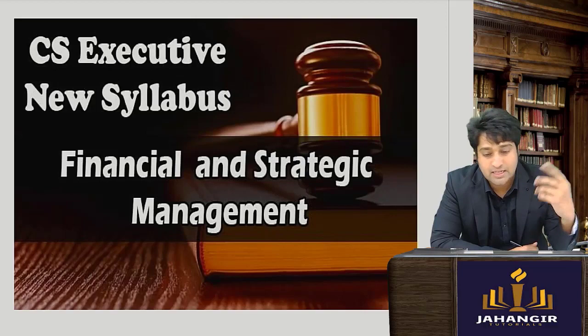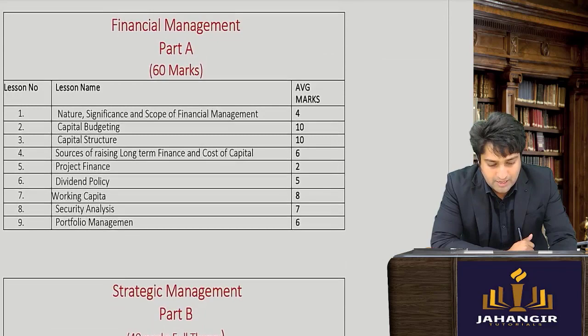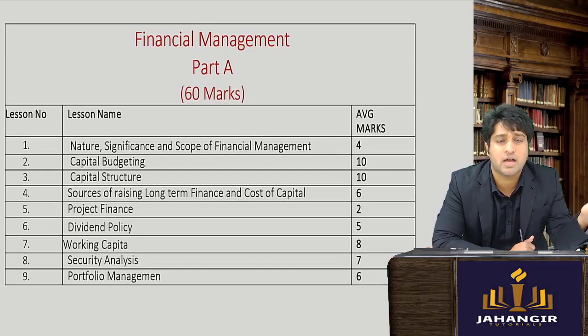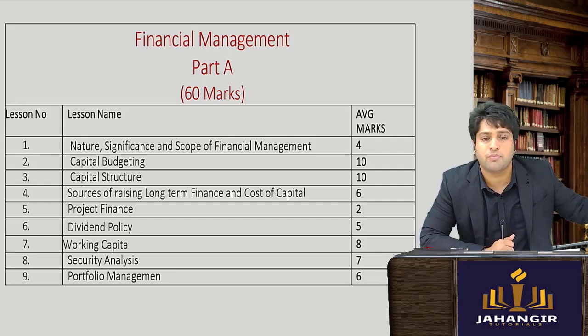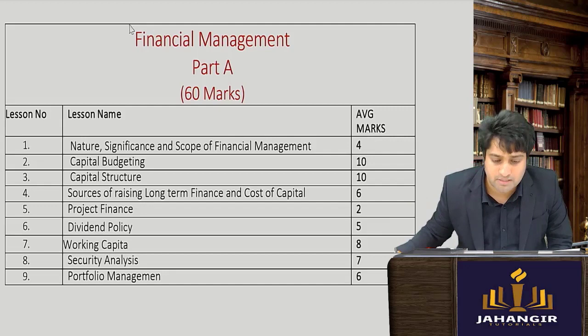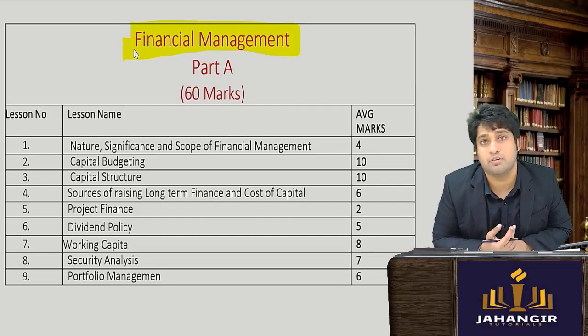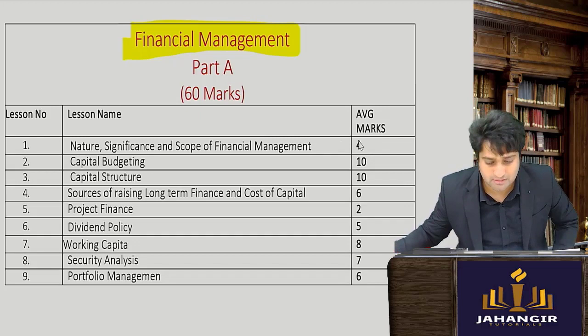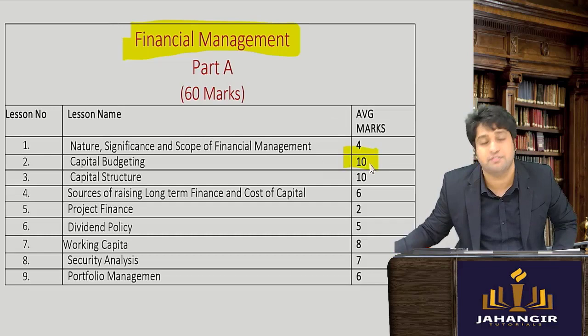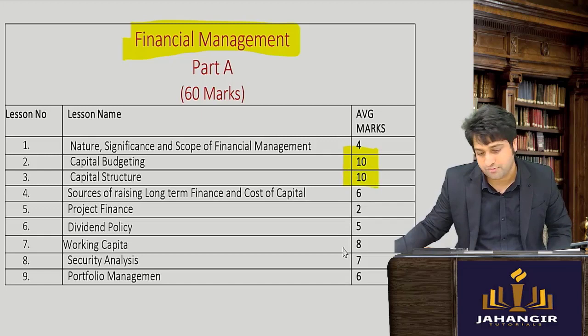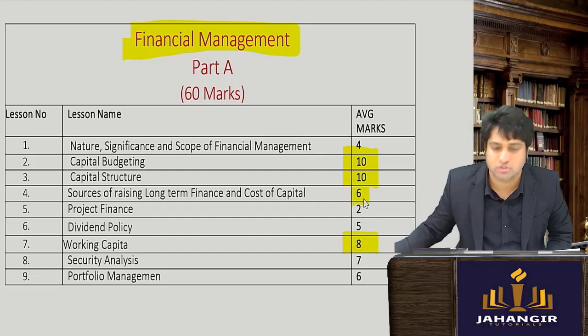Financial and Strategic Management — FM is supremely simple. It was previously taught at the professional level but has now been moved to executive. No points for guessing the chapter weightage: Capital Budgeting always has the highest weightage, followed by Capital Structure, then Working Capital. This standard has been consistent for years.